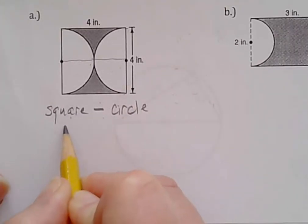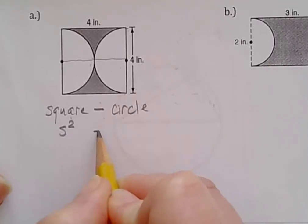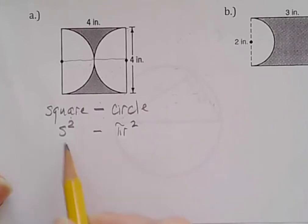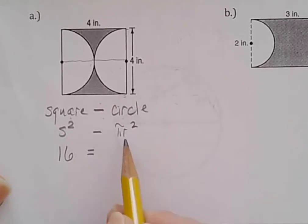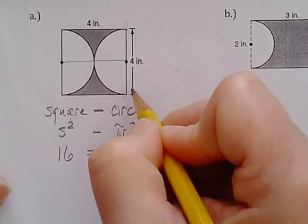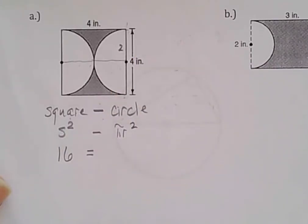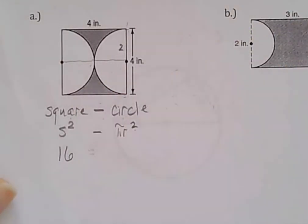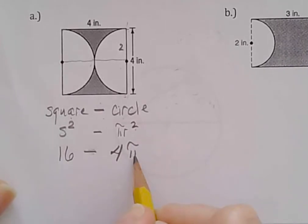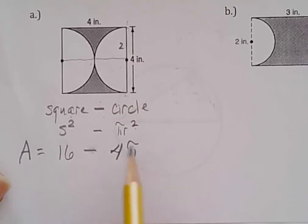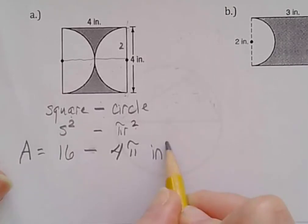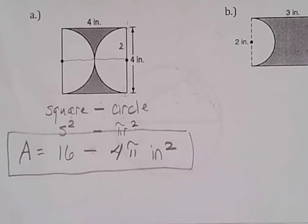Well, my square formula is side squared. Circle formula is πr². Well, my side is 4. 4 times 4, that's 16. Radius. Well, let's see. The diameter is a side, so that's 4. My radius is 2. 2 squared, 4, so that equals 16 minus 4π. And that's my answer. I could take this and I could plug it into a calculator and get some decimal because, of course, I have a π. Or we can leave it like this, inches squared. And that is an exact answer.